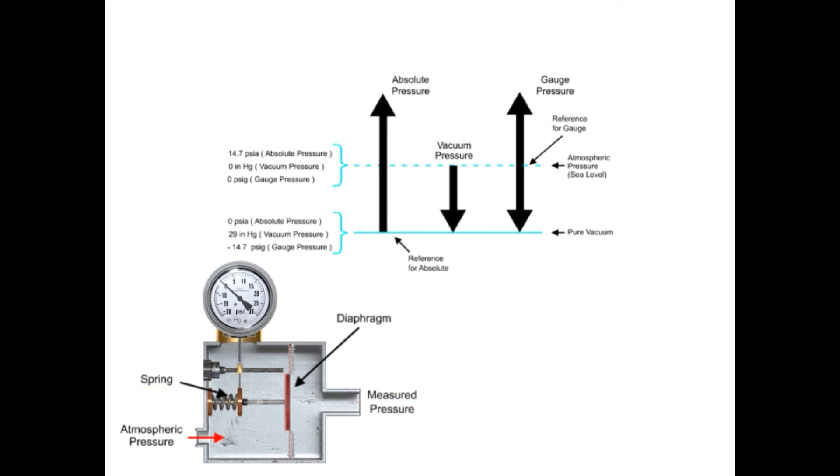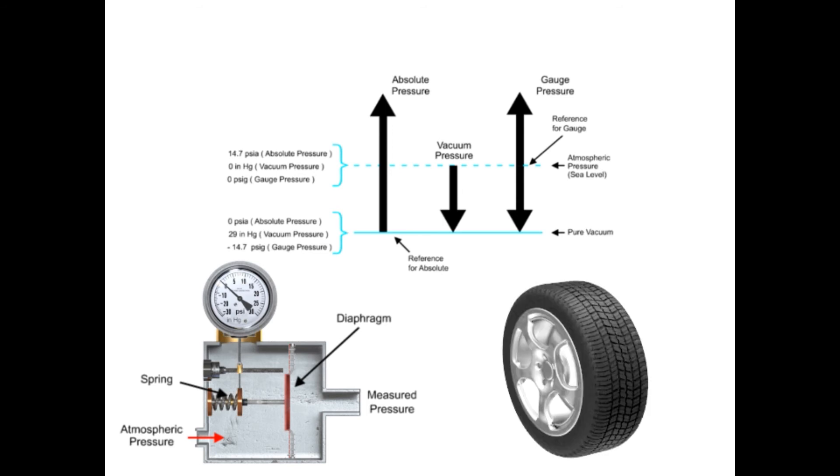Positive gauge pressures are demonstrated with an inflated tire. When the sensing element is attached to the tire, a positive pressure is indicated on the gauge.